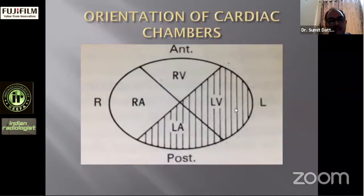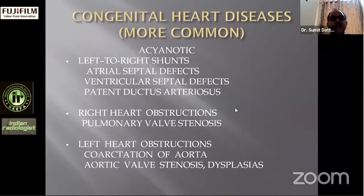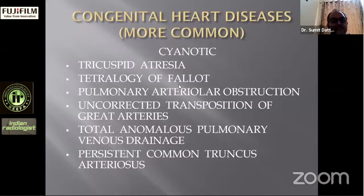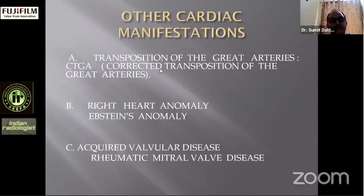In this lecture we will cover acyanotic congenital heart disease — left-to-right shunts, right heart obstruction, and left heart obstruction — as well as the cyanotic spectrum: tricuspid atresia, tetralogy of Fallot, pulmonary arterial obstruction (Eisenmenger's reaction), uncorrected transposition of great arteries, total anomalous pulmonary venous drainage, and persistent common truncus arteriosus. We will also cover corrected transposition of great arteries, Ebstein's anomaly, and rheumatic mitral valve disease.